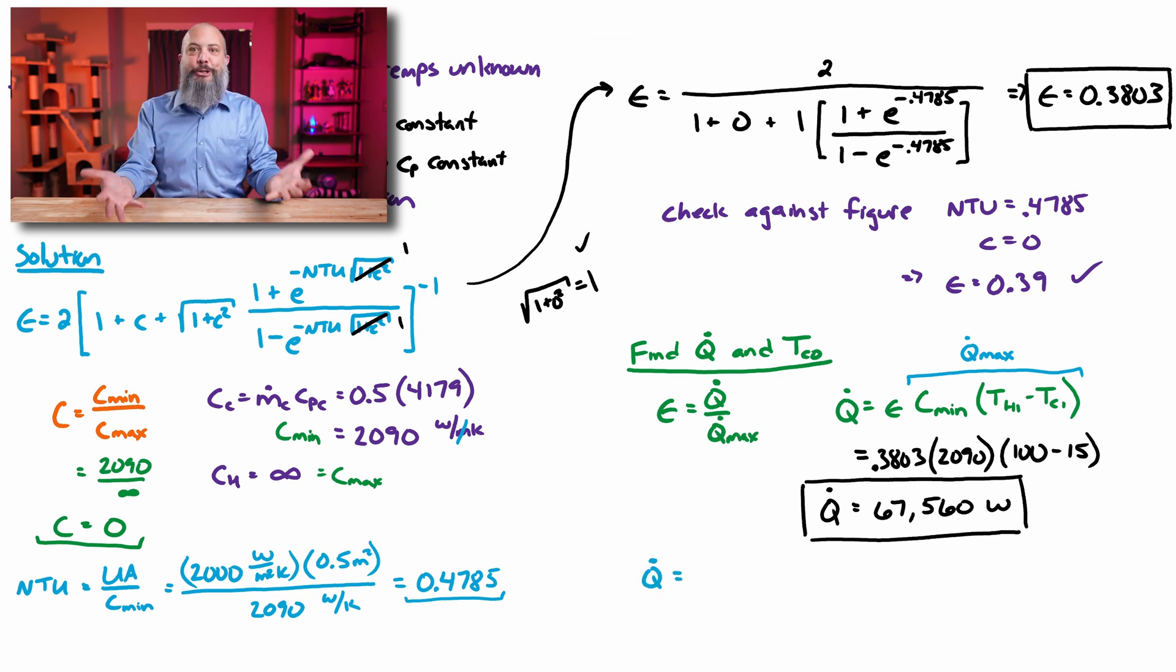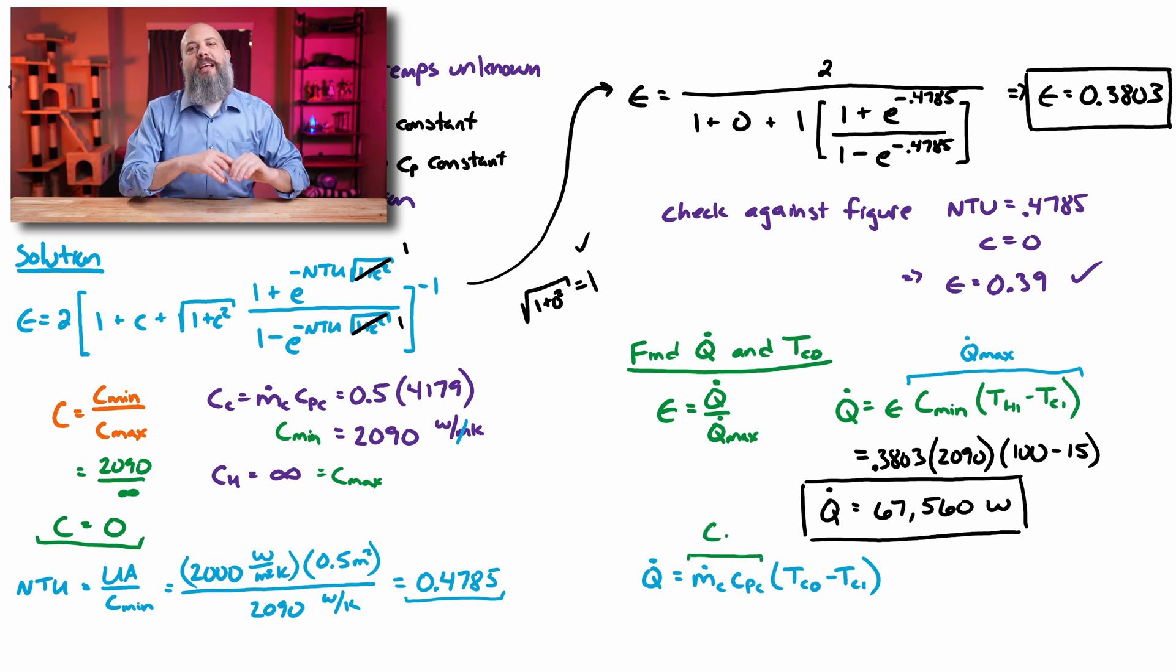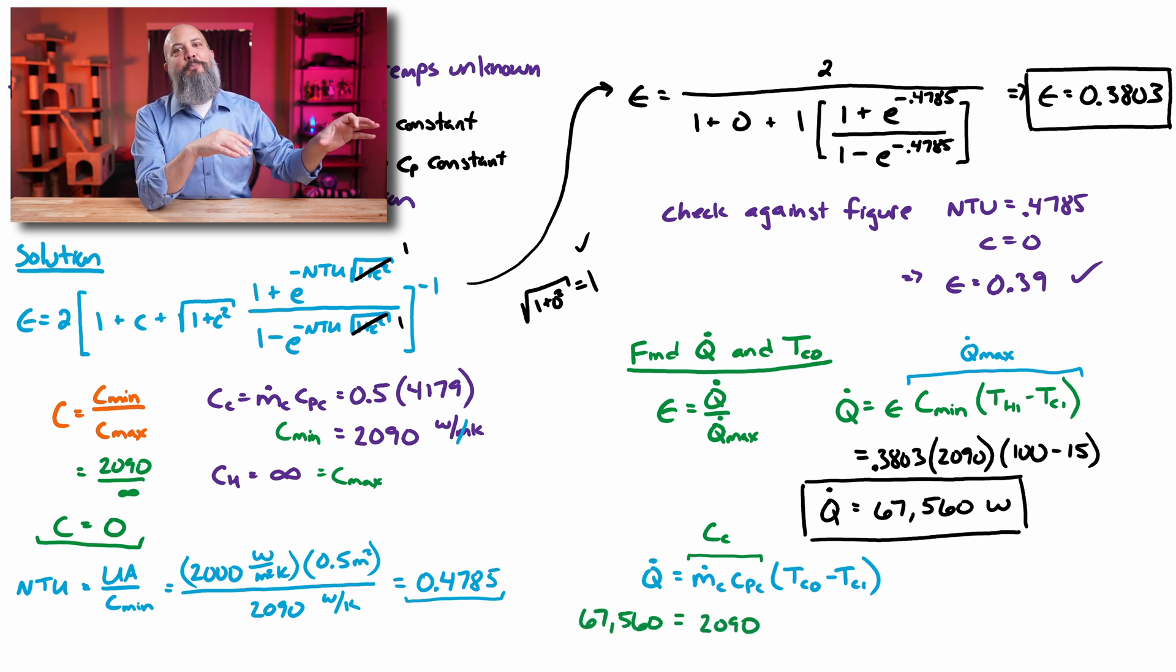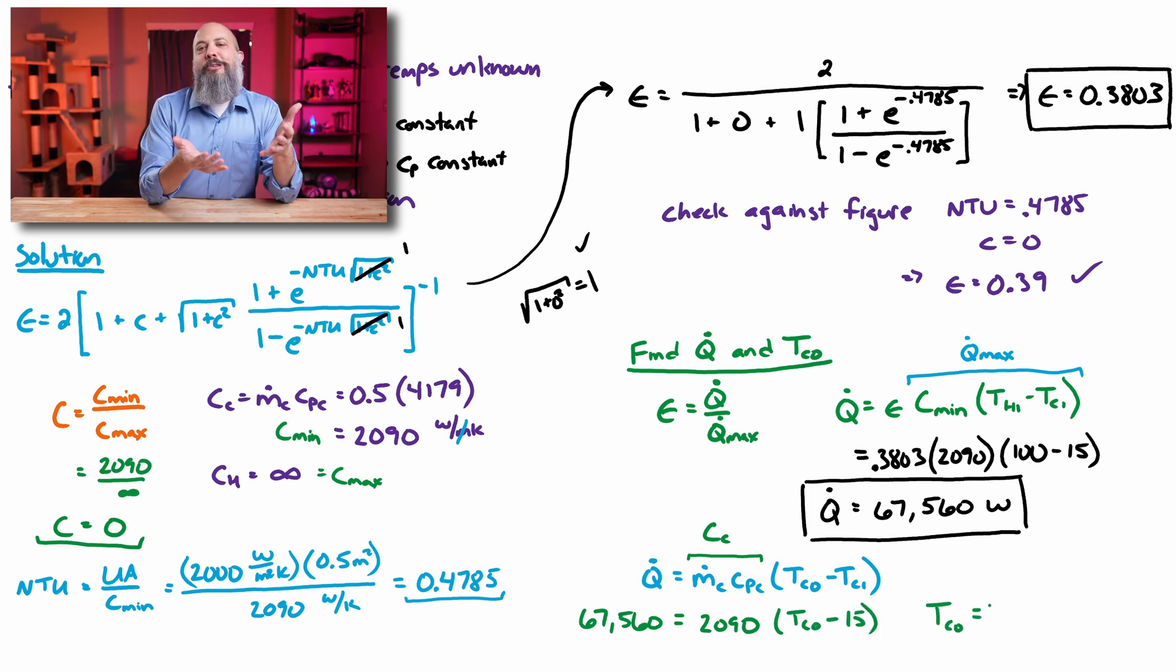This lets us solve for what the final temperature actually is. We have Q dot is M dot CP delta T. We just solved for Q dot, 67,000 watts. M dot CP for the cold flow is 2,090. And then delta T is the actual exit temperature for the cold flow minus the 15 degree inlet temperature. We get an outlet temperature of 47.33 degrees Celsius.